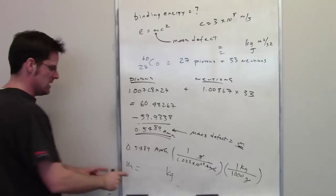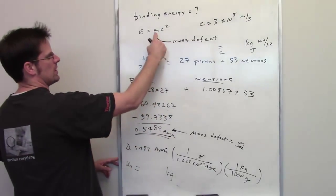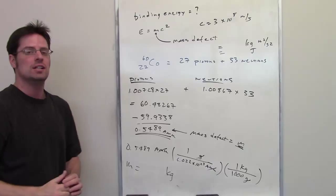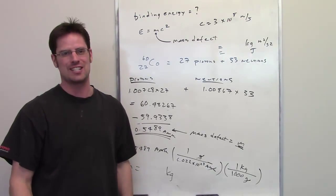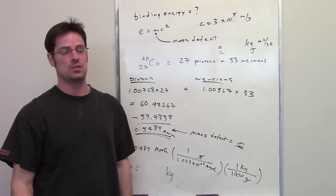So whatever answer you end up getting when you take this number, throw it in there, and take that number, square it, multiply the two together, should be your final answer, and that is the binding energy for a cobalt-60 nucleus. Just what you always wanted in that one.